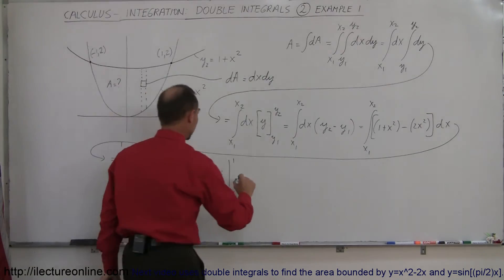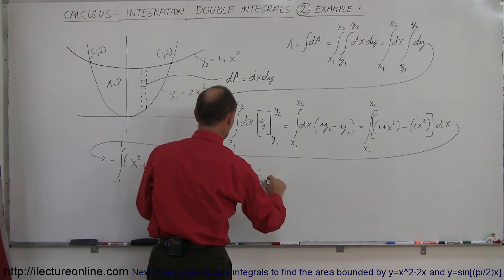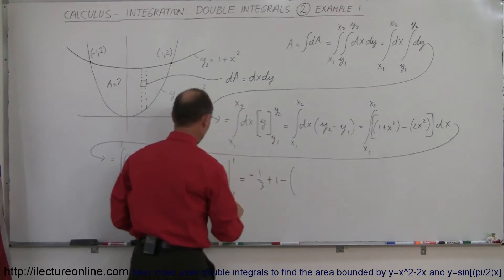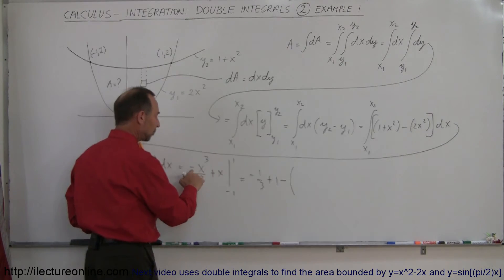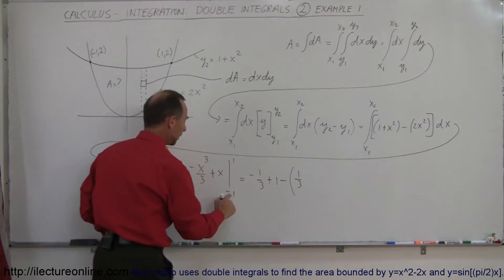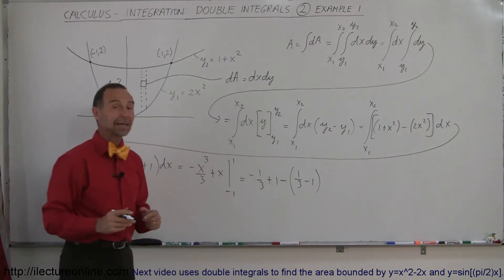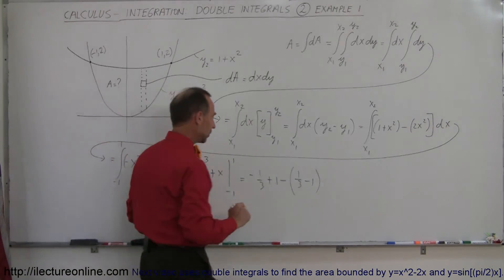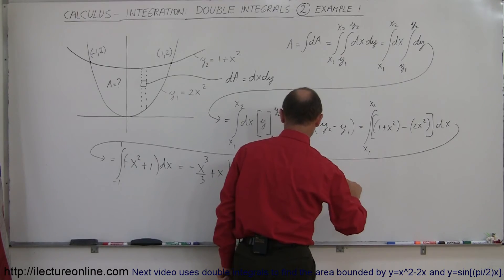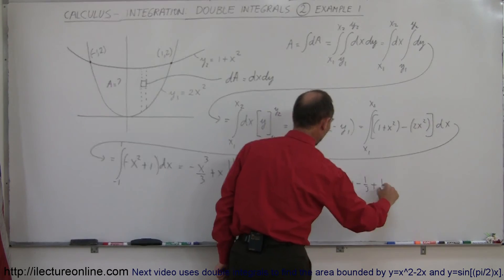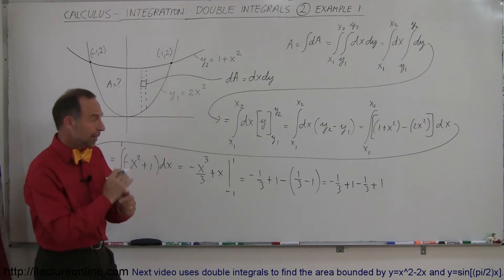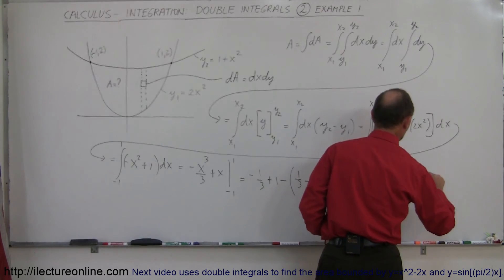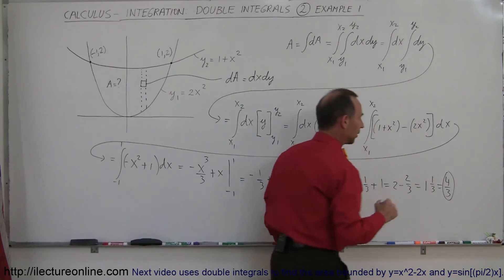Plugging in the upper limit x equals 1: we get minus 1 over 3 plus 1. Plugging in the lower limit x equals negative 1: minus (negative 1) cubed over 3 is plus 1 third, and negative 1 for the x term gives minus 1. Getting rid of the parentheses and applying the sign, this equals minus 1 third plus 1 minus 1 third plus 1. Combining like terms gives 2 minus 2 thirds, which equals 1 and 1 third, or 4 thirds.